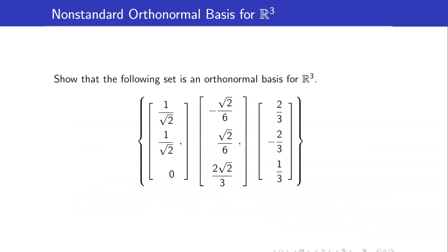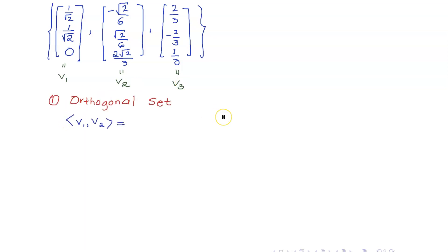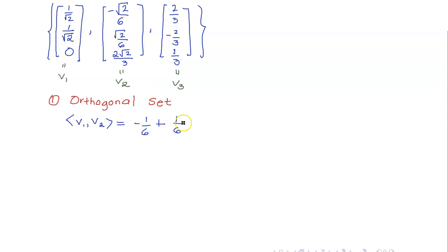Here is another example. Let us show that the following set is an orthonormal basis for R3, again referring to the Euclidean inner product. I have three vectors — let me call them V1, V2, and V3. First, let us check that this is really an orthogonal set. Let us compute the inner product of V1 and V2: we get negative 1/6 plus 1/(√2 · √2 · 6), which is 1/6, plus 0 — so that is really equal to 0.